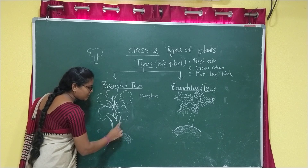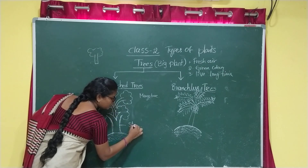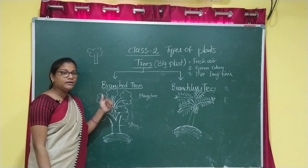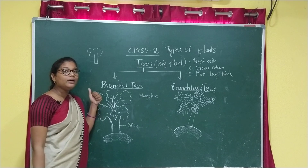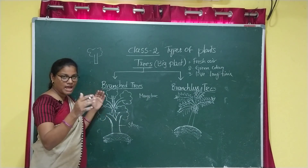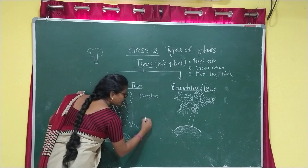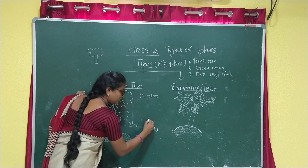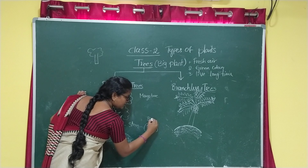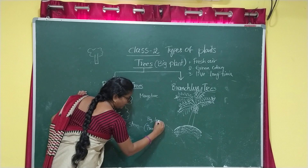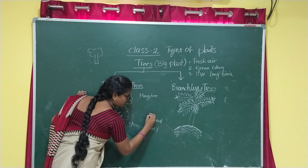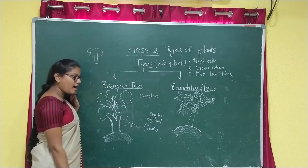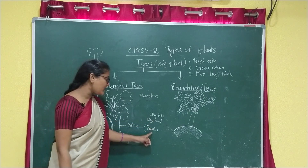This is the stem. Some trees have a big stem that is hard. The stem is in big size and has a hard nature. When the stem is big and hard, it is known as a trunk.